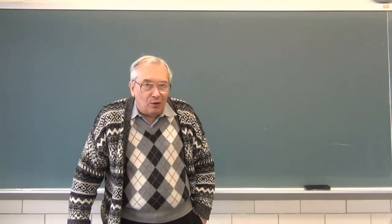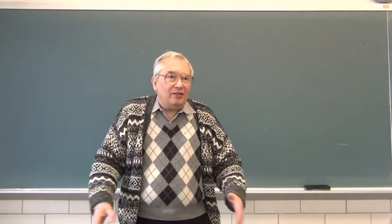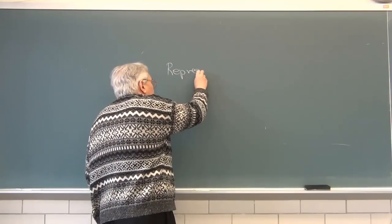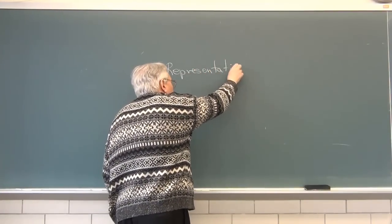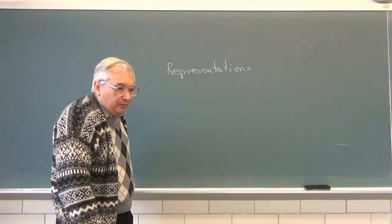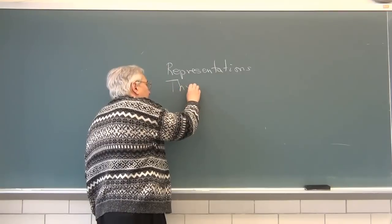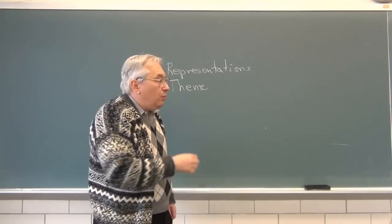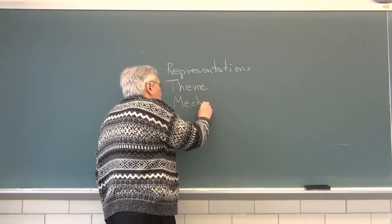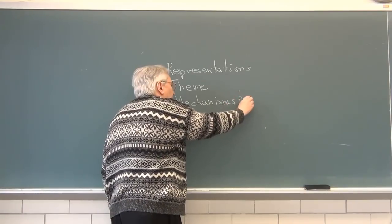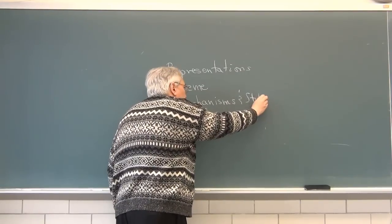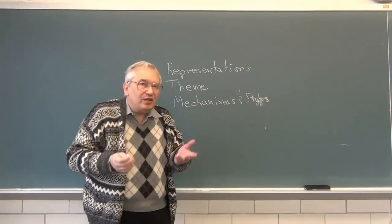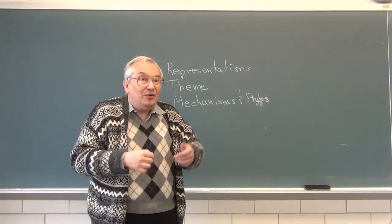Where are we? Last time we discussed general variables that occupy all games. We talked about representations — what you see if you look at the table. We talked about theme — theme is what the game is about. We talked about mechanisms and styles. The mechanisms are the little pieces that you assemble together in the rules, and when you assemble enough mechanisms, if you do a good job of it, you actually have a game.